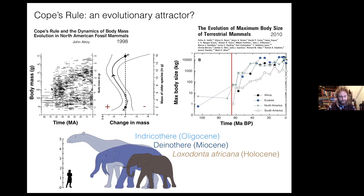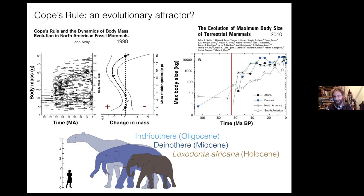Around 66 million years ago the asteroid hits Earth and dinosaurs go extinct. Before that point, mammals are relatively small — this is a log scale with body mass in grams. After the asteroid impact, non-avian dinosaurs are wiped out and mammals fill the space. There have been some really nice diffusion models applied to understanding how mammalian body size fills this empty niche space that the asteroid leaves. They fill this niche space and very quickly attain very large body sizes.